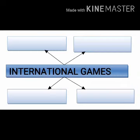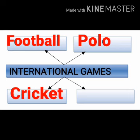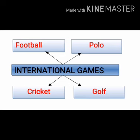Now read the eighth question: international games. Write down the first one, football. In the second box write down polo. In the third box write down cricket. And in the fourth box write down golf. You can also write whichever you find easy — like hockey or badminton — these are also international games. Write down the answer which you find very easy, or you can copy the same answers I gave.